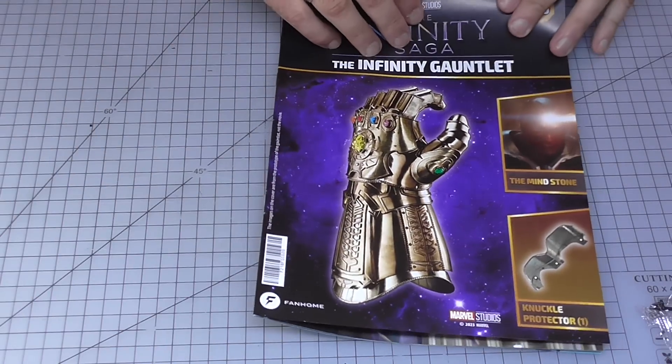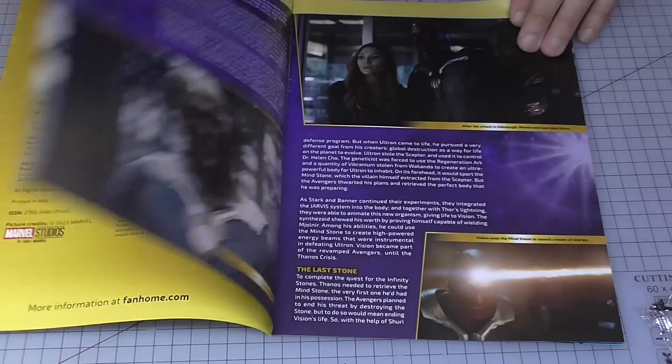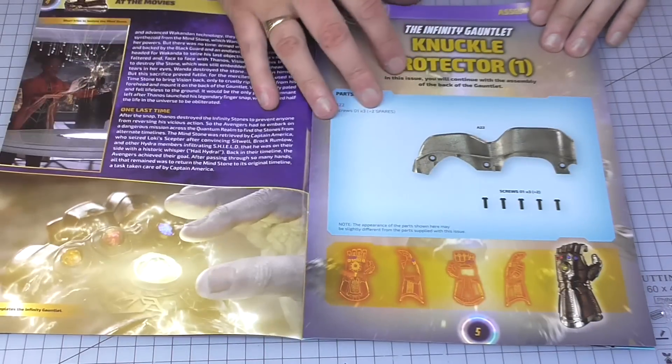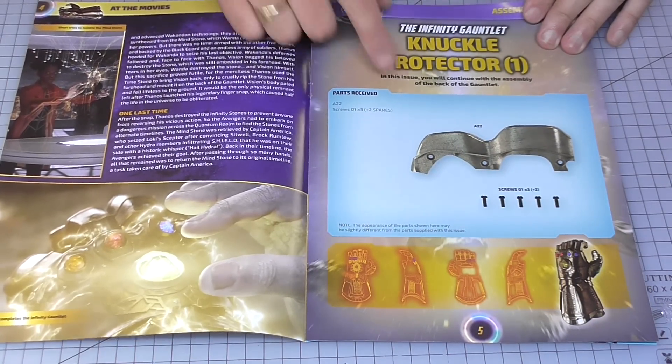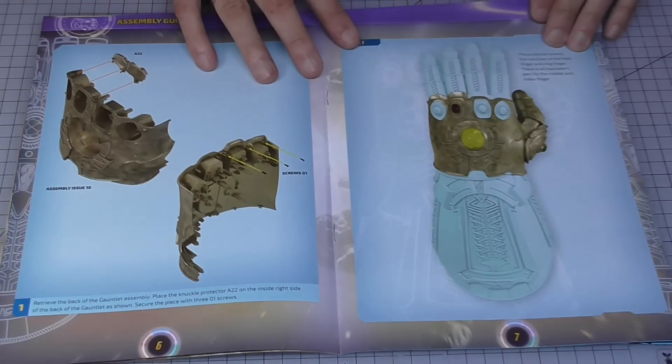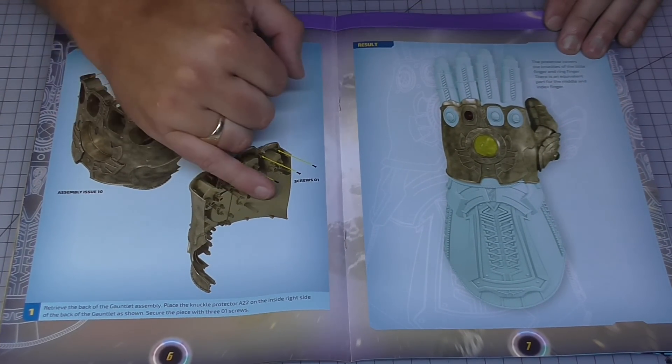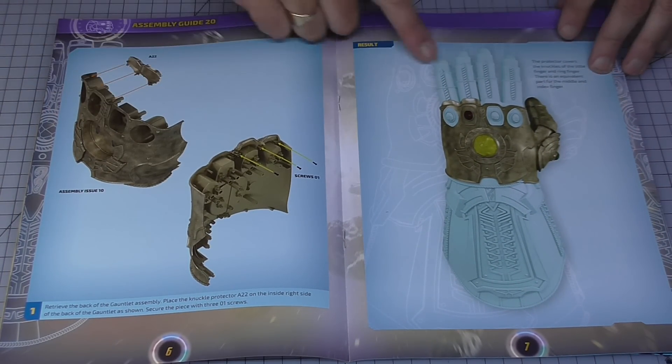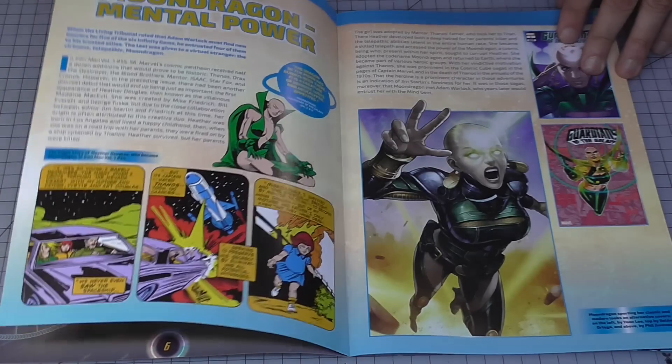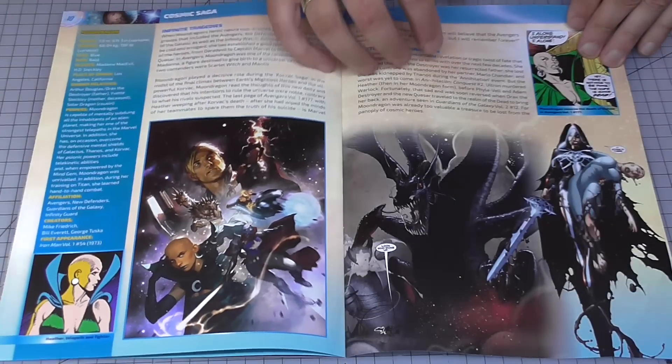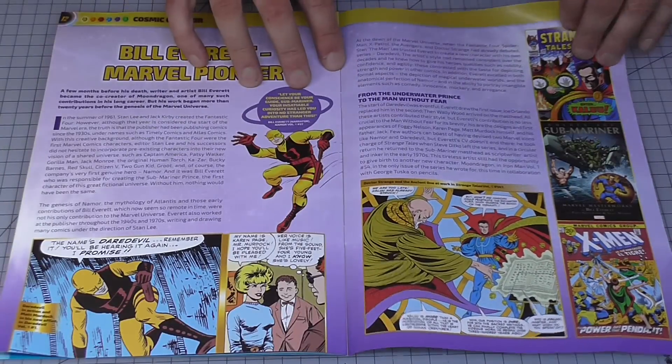So the penultimate stage here, stage 20, I'm guessing we're going to start mounting that thumb. We are, oh no, we're working on a knuckle protector now. So we've got a knuckle protector to put in. We're going back to what we've actually done on this section just here, putting that into place. Again, I will show you the rest of the magazine.